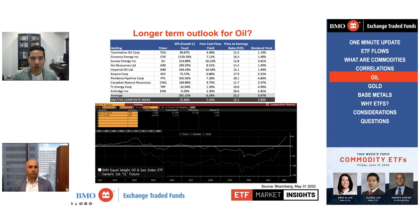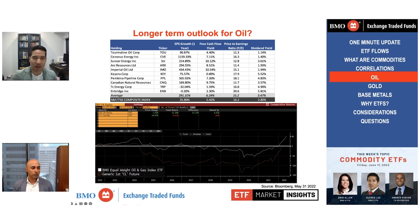When you look at the companies within ZEO — our equal weight oil and gas ETF — prices have gone up quite a bit over the last year and a half, but earnings per share growth has been growing at an even faster rate. Price-to-earnings for the sector still remains cheaper than the TSX, so we believe energy companies are still trading at attractive valuations. Andreas made a good point about free cash flow: if energy companies are hesitant to spend on new infrastructure, the likelihood is that dividend yields and share buybacks will increase over the next couple of years, which should be supportive for energy stock prices.